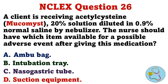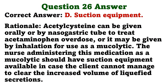A client is receiving acetylcysteine 20% solution diluted in 0.9% normal saline by nebulizer. The nurse should have which item available for a possible adverse event after giving this medication? A. Ambu bag. B. Intubation tray. C. Nasogastric tube. D. Suction equipment. The correct answer is D: suction equipment. Acetylcysteine can be given orally or by nasogastric tube to treat acetaminophen overdose, or it may be given by inhalation for use as a mucolytic. The nurse administering this medication as a mucolytic should have suction equipment available in case the client cannot manage to clear the increased volume of liquefied secretions.